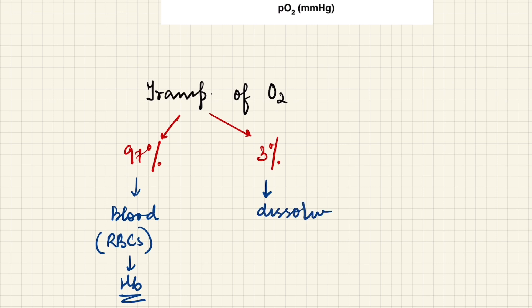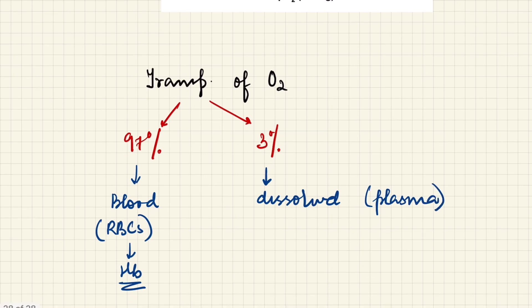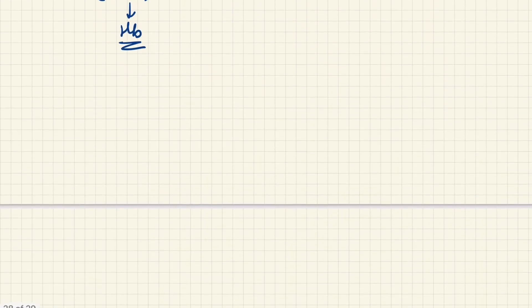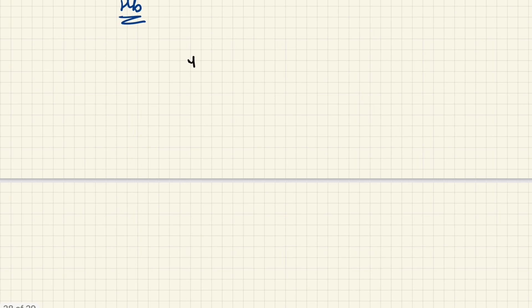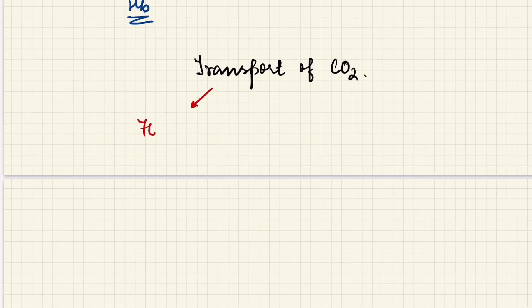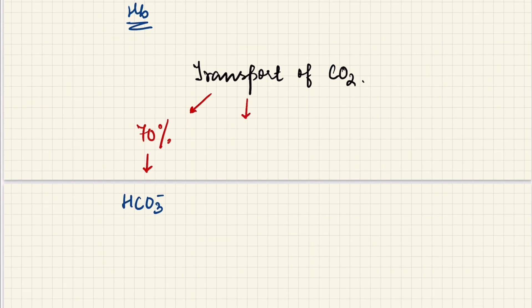Now talking about the transport of carbon dioxide: 70% of carbon dioxide is carried as bicarbonates, 25% of carbon dioxide is carried by RBCs.